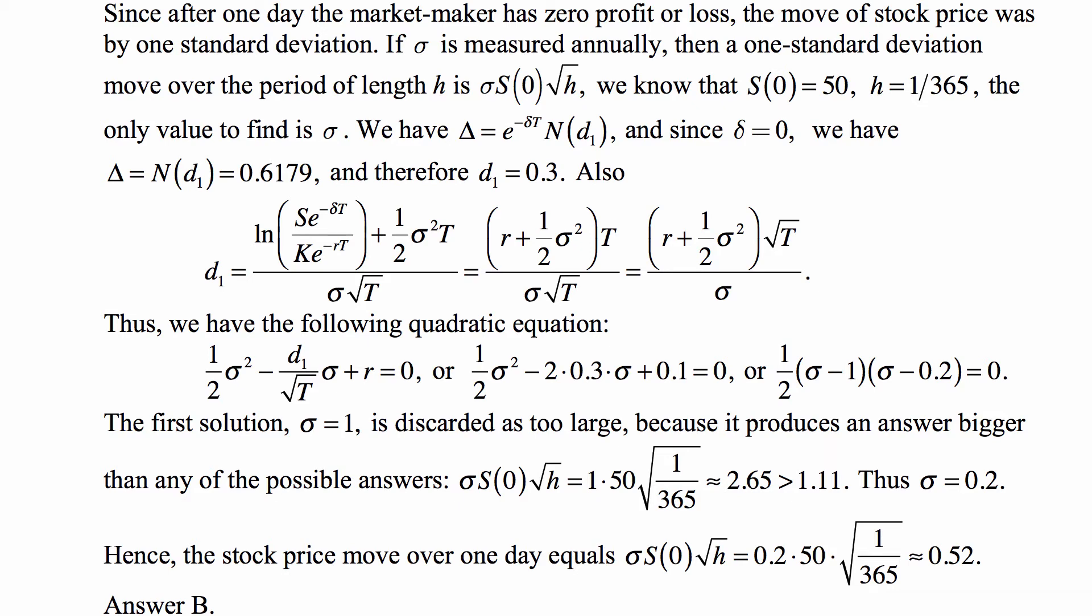And we know that S(0) is 50, h is 1/365, the only value to find is sigma. Under the Black-Scholes model and Black-Scholes formula, the delta of the call is e^(-δt) times N(d1), and delta, the dividend yield is zero.